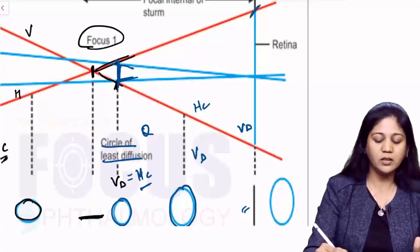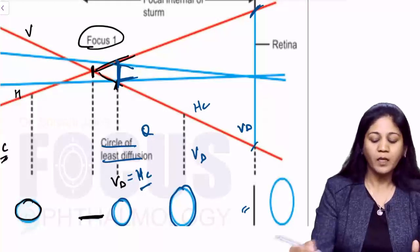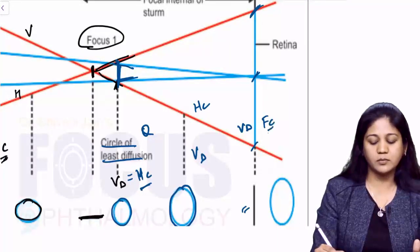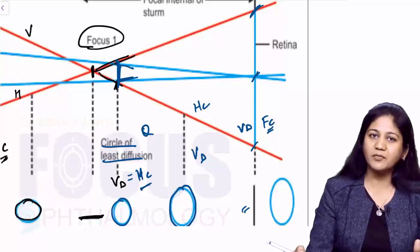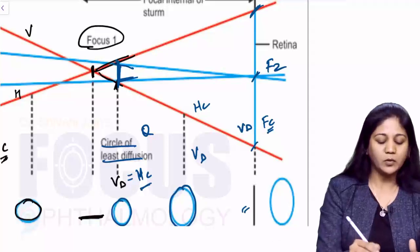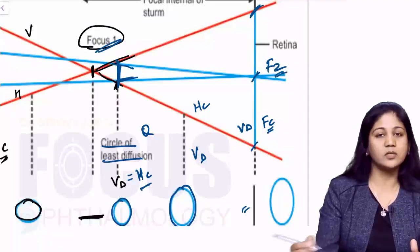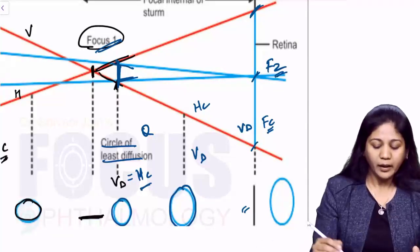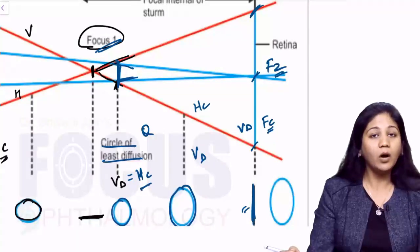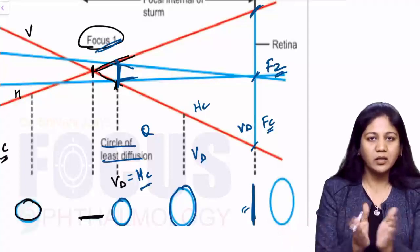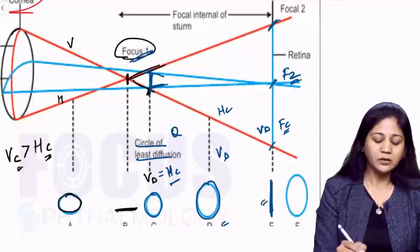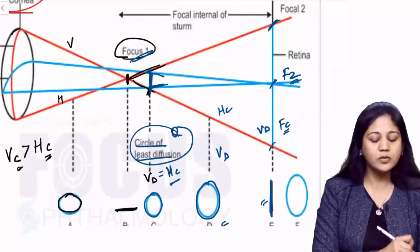At point E, the vertical rays are diverging and the horizontal rays have come to a focus — this is Focus Number Two. The resulting image at point E is a vertical line, because the vertical rays are still diverging. This completes the Sturm's Conoid, with the Circle of Least Diffusion in between the two focal lines.